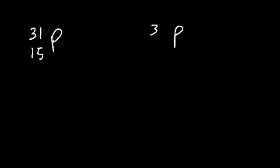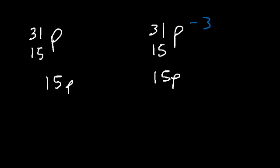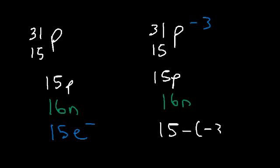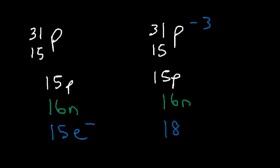Try this: for phosphorus-31 and the phosphide ion, calculate the number of protons, neutrons, and electrons. The atomic number is 15, so both have 15 protons. The neutron number is 31 minus 15, which equals 16, so both have 16 neutrons. For electrons: the phosphorus atom has 15 minus 0 equals 15 electrons. The phosphide ion is 15 minus negative 3, which equals 15 plus 3, so 18 electrons. An ion with a negative charge has more electrons than protons.